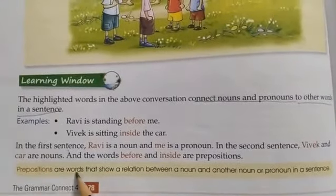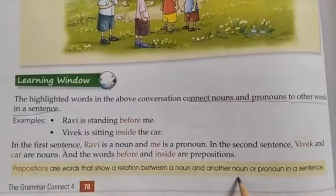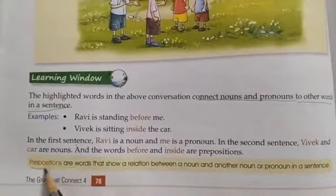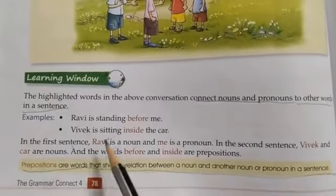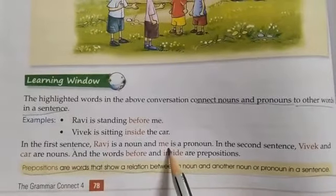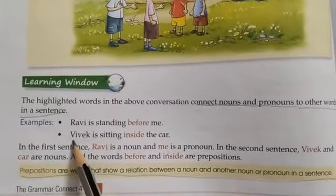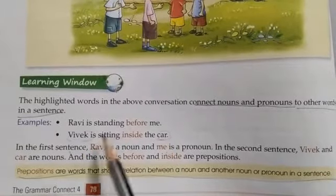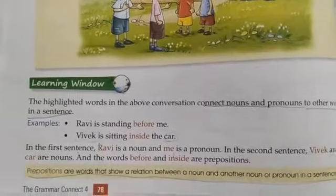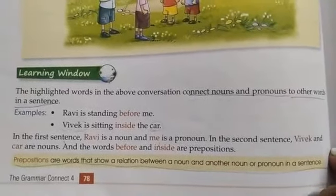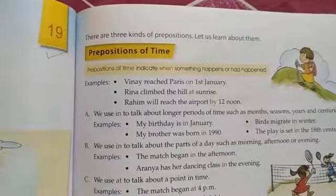So prepositions are words that show a relation between a noun and another noun or pronoun in a sentence. This is the definition of a preposition. Now we will move on towards the kinds of prepositions.